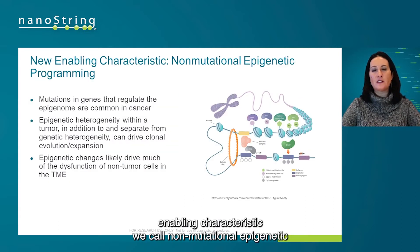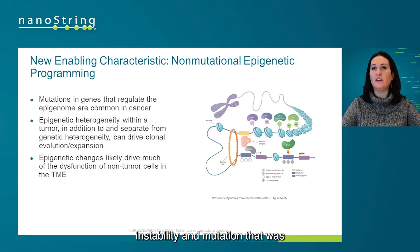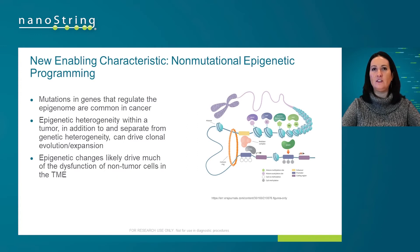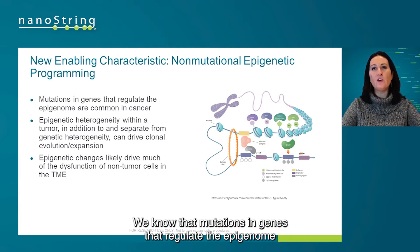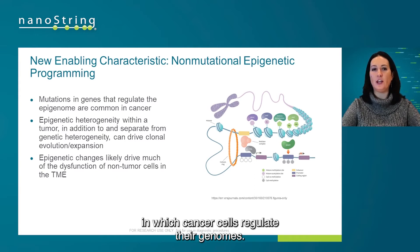The new enabling characteristic we call non-mutational epigenetic reprogramming is more or less the pair of the genetic instability and mutation proposed years ago. Now we understand that not just genetic changes but epigenetic changes can lead to important features of cancer cells and even the cancer microenvironment. We know that mutations in genes that regulate the epigenome are common in cancer and give us a sense that epigenetics is a crucially important way in which cancer cells regulate their genomes.